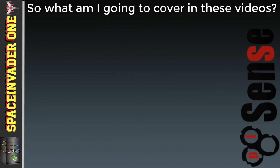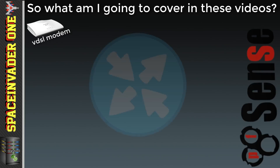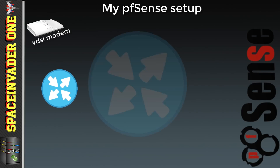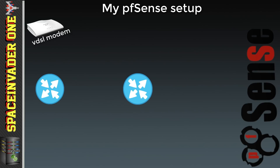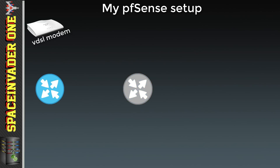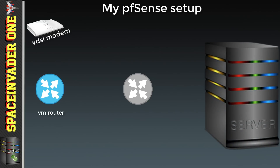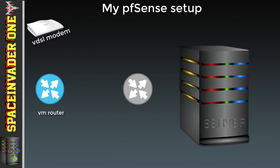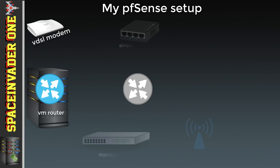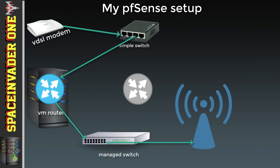Over the course of these videos I'll be showing you how to set up various different things on PFSense. But to give you an idea of the kind of things you can do, let me show you what I do with my PFSense. I'm using two PFSense routers on my network, although they're not both turned on at the same time, and there's a good reason for that — my main PFSense machine is running as a VM on my Unraid server, and this works really well.